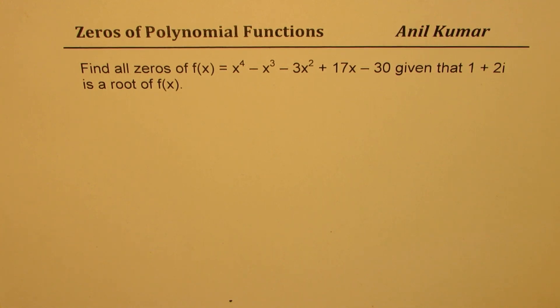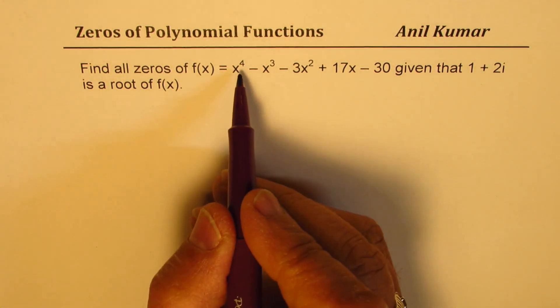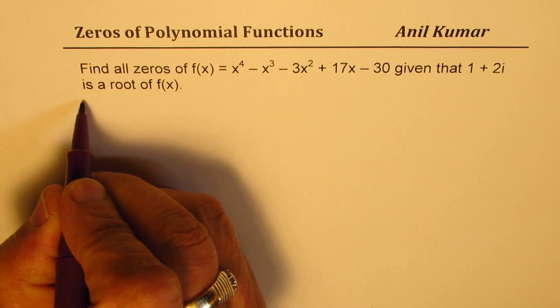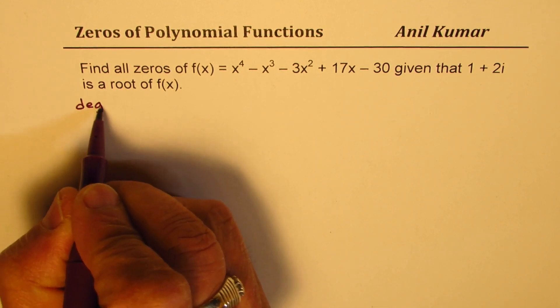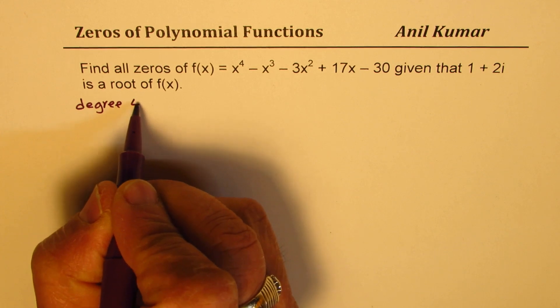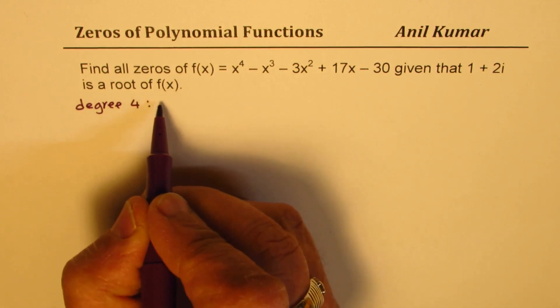Now, let's understand a few facts. In this particular case, we have degree 4, right? That means there are four zeros.